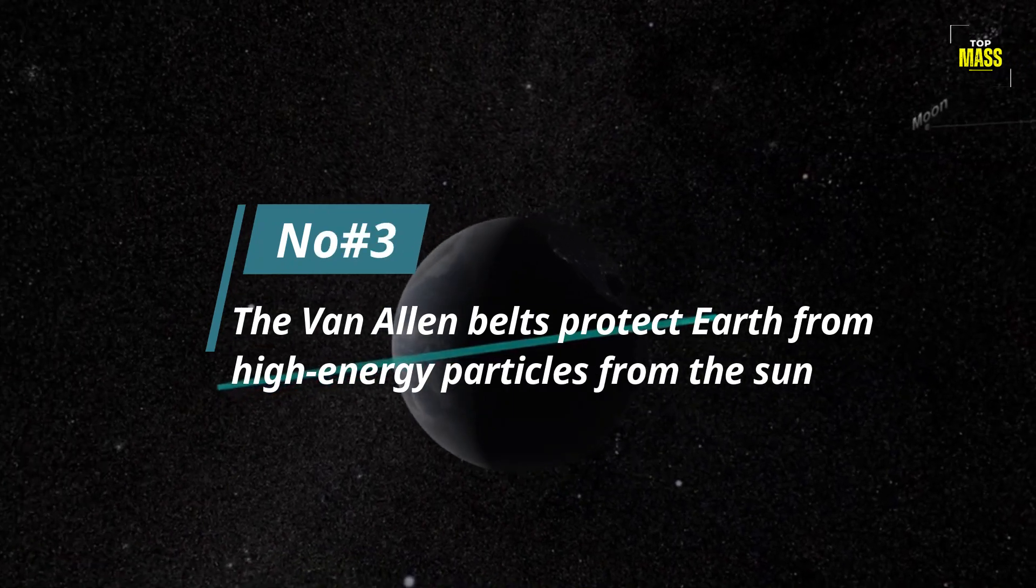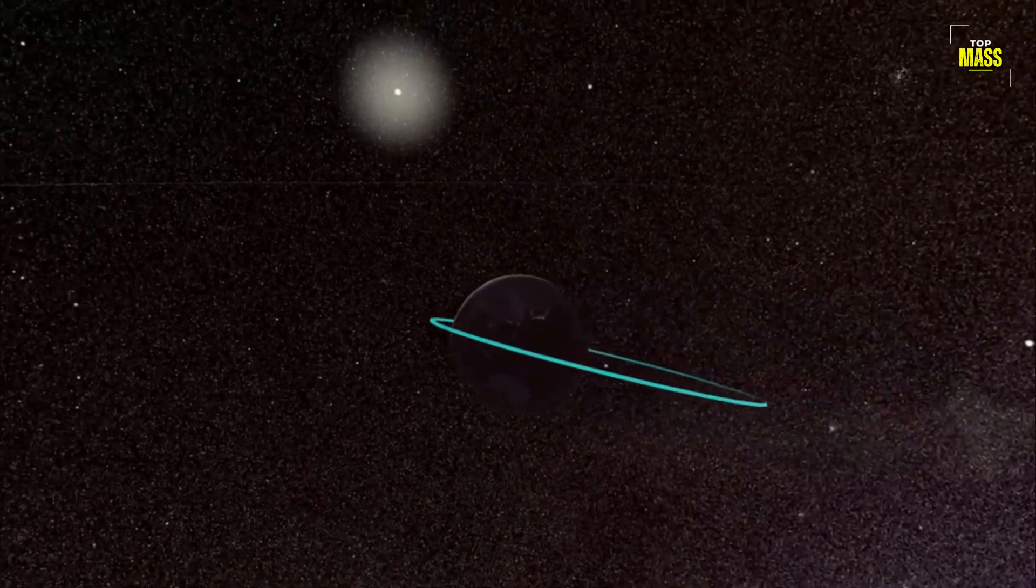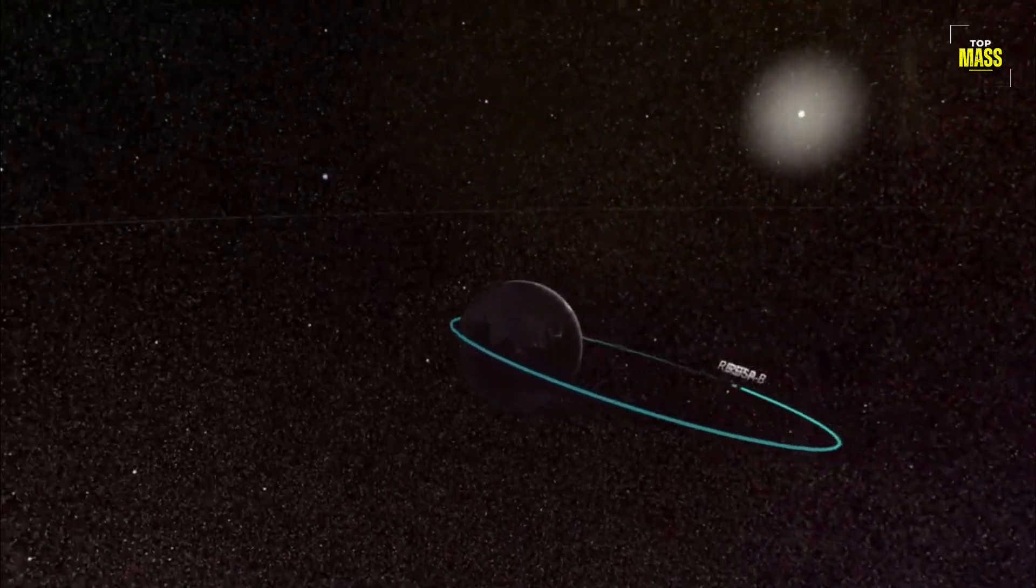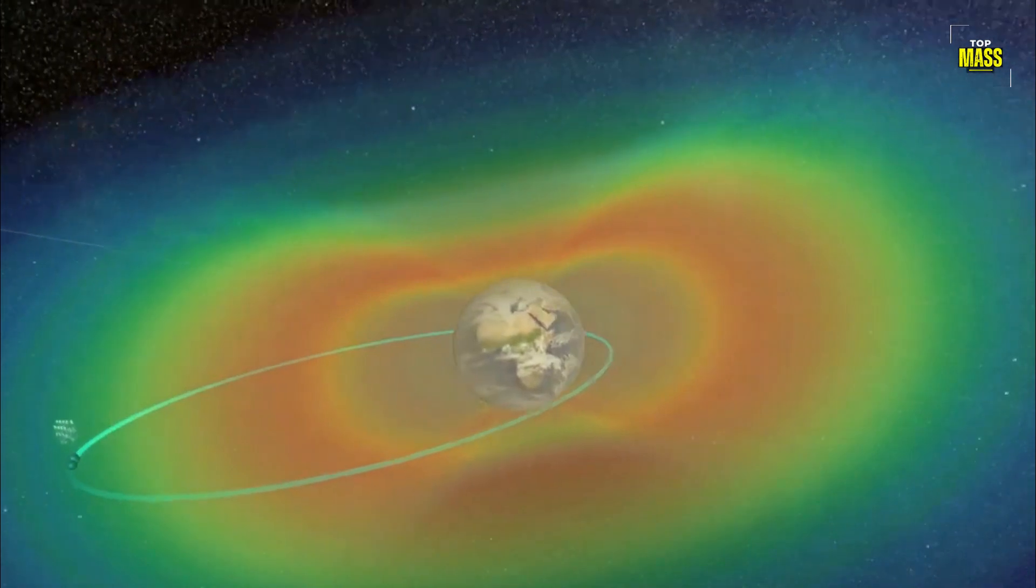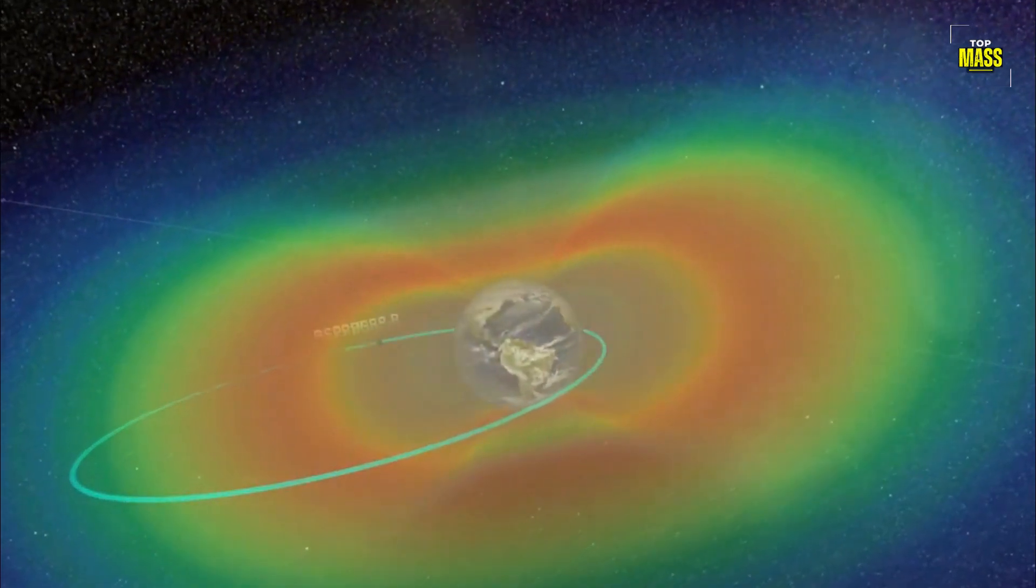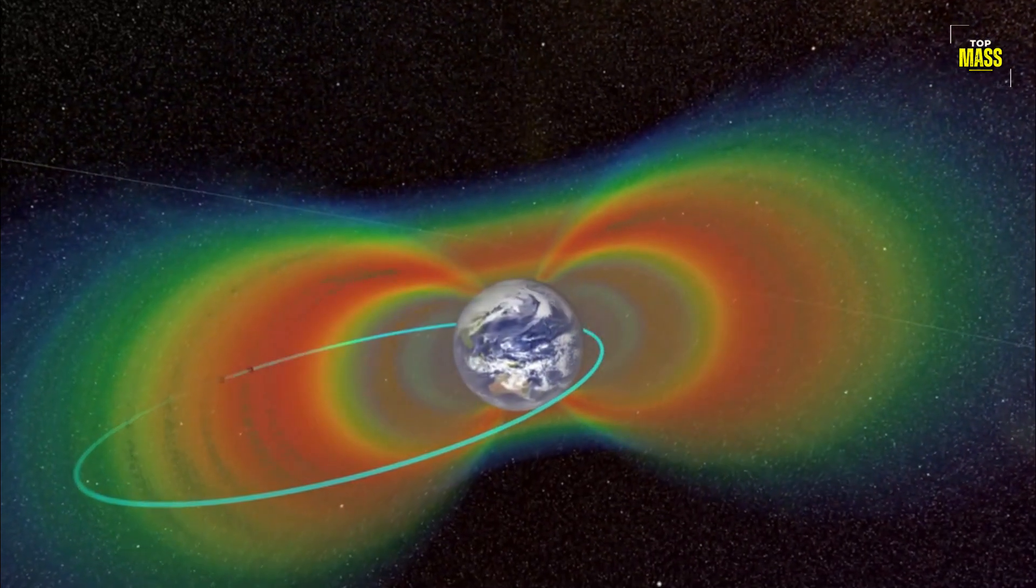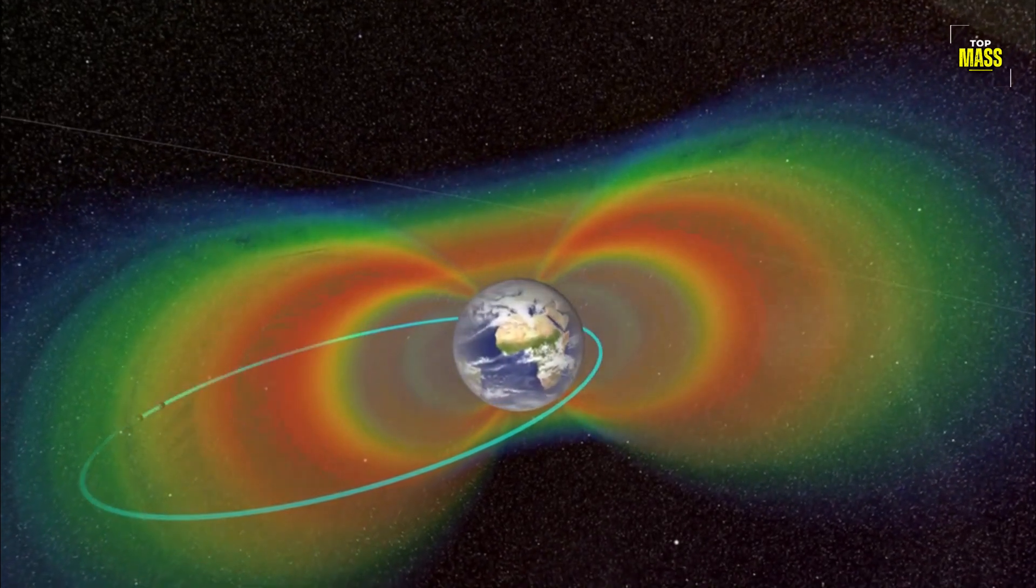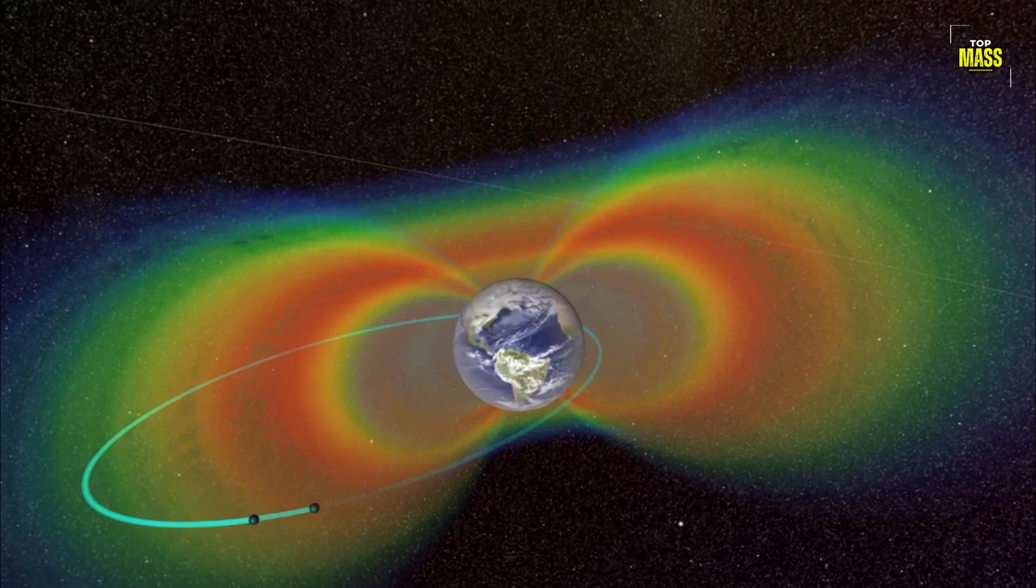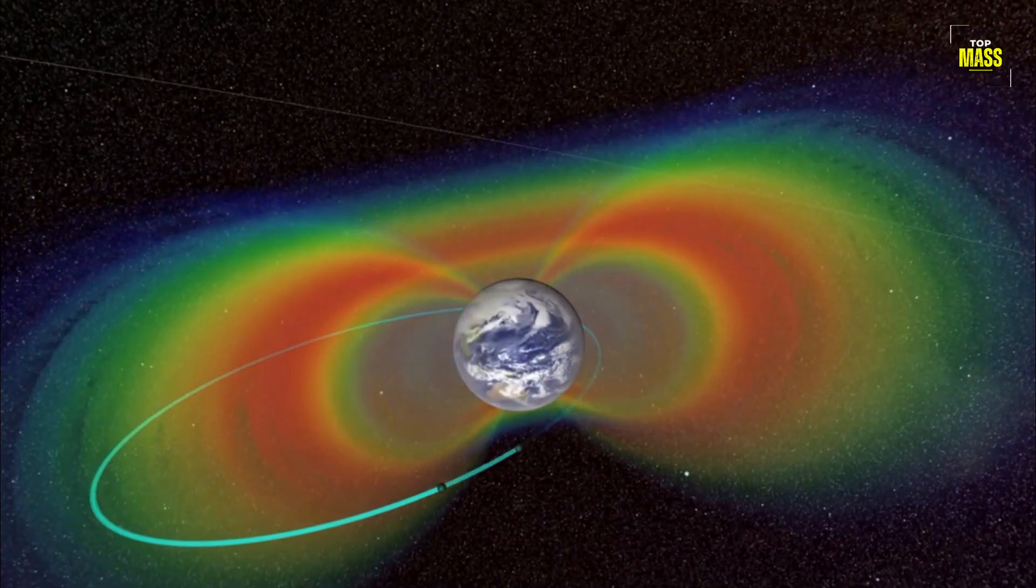Number 3. The Van Allen Belts Protect Earth from High Energy Particles from the Sun. The Van Allen Belts are two regions of charged particles that surround the Earth. These belts were discovered by James Van Allen in 1958, and they play a crucial role in protecting our planet from harmful high-energy particles emanating from the Sun. The inner belt is composed mainly of protons, while the outer belt contains mostly electrons. Both belts trap these highly energetic particles within their magnetic fields, preventing them from reaching Earth's surface and causing damage to living organisms.